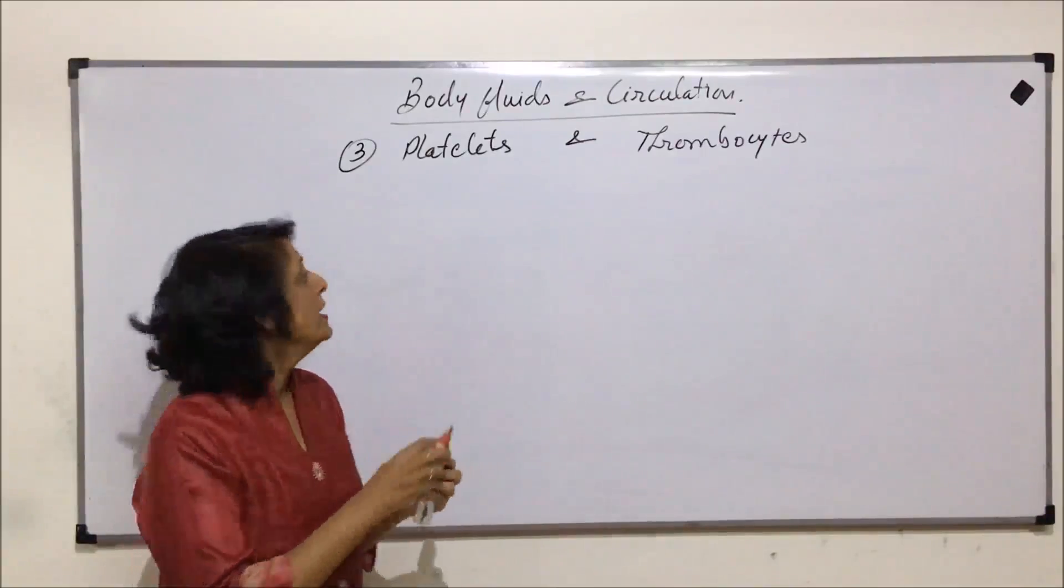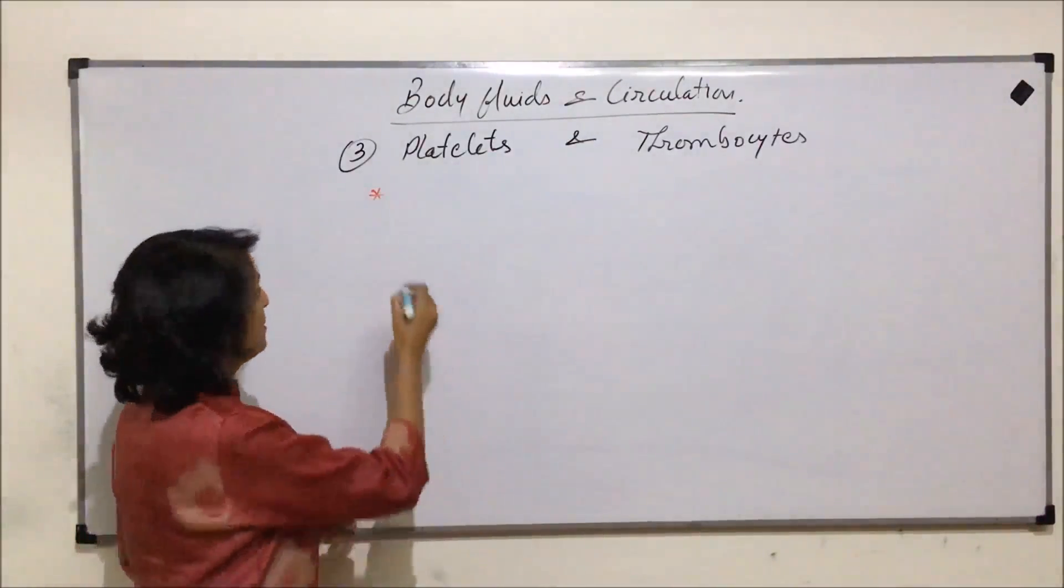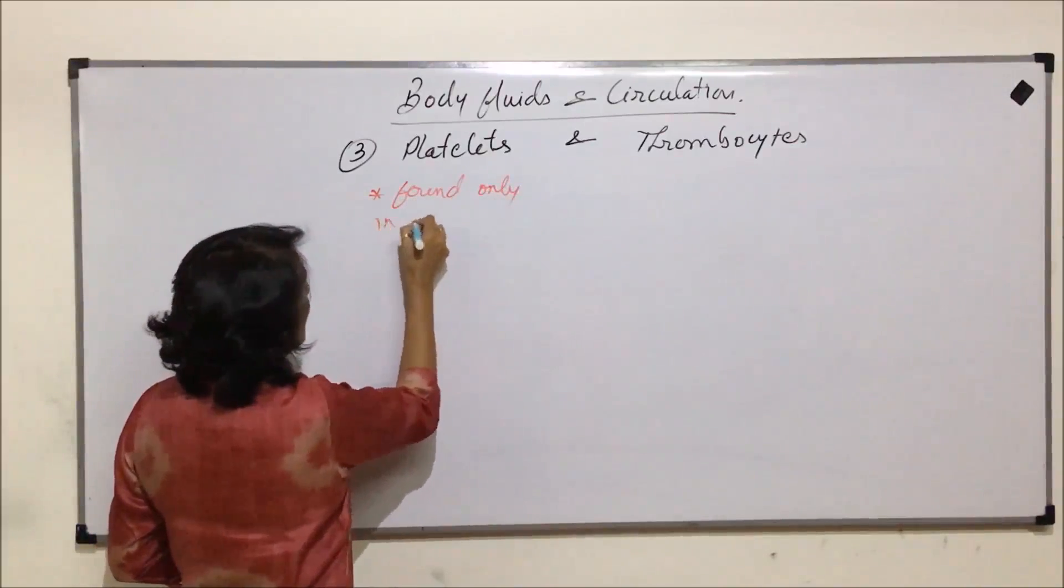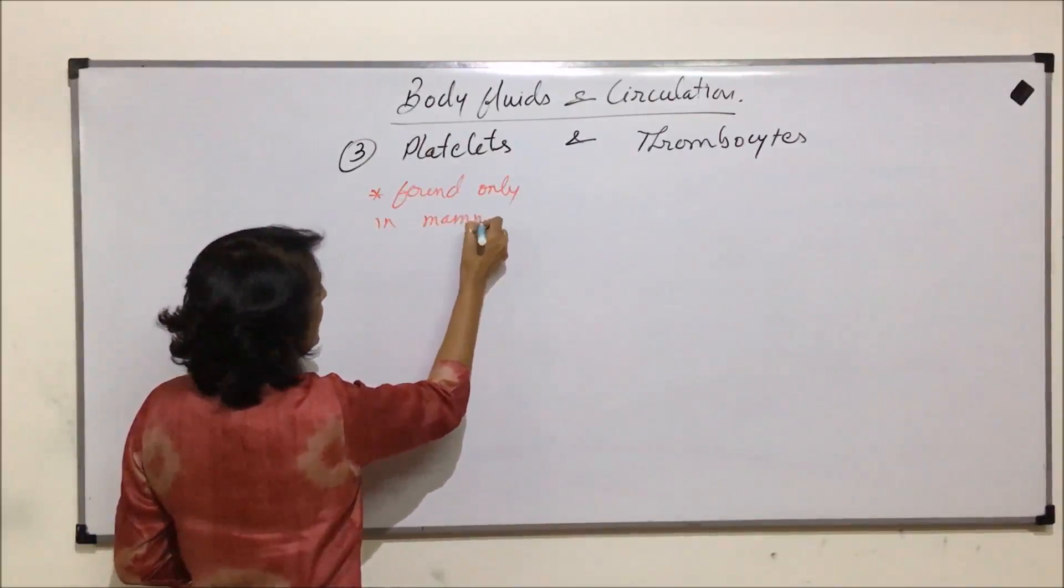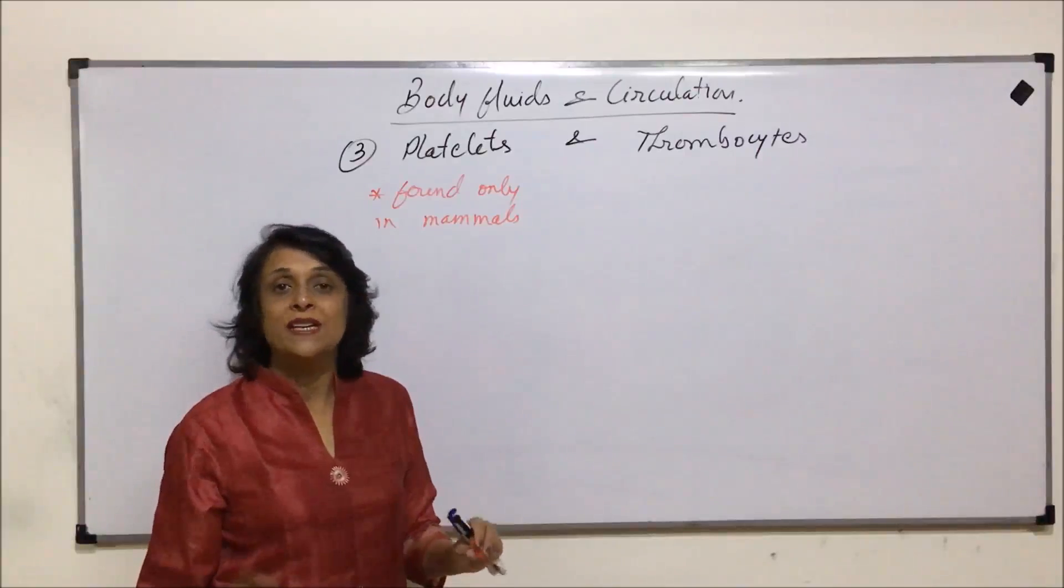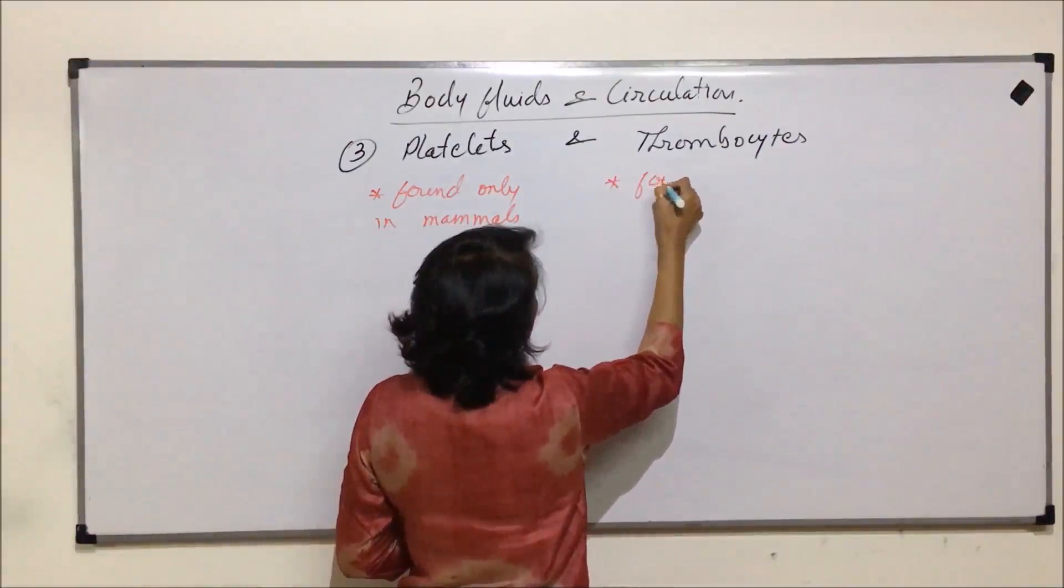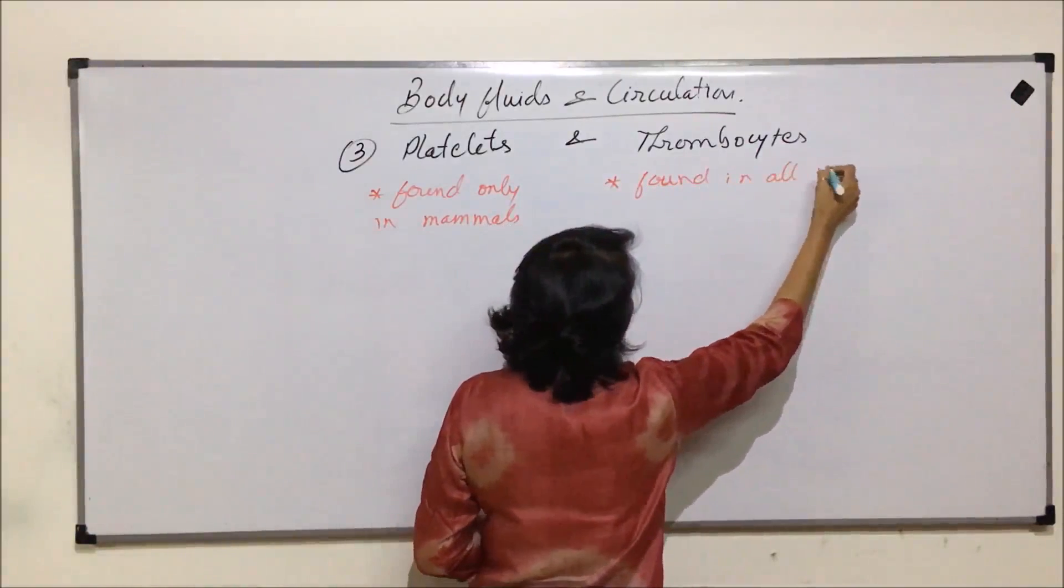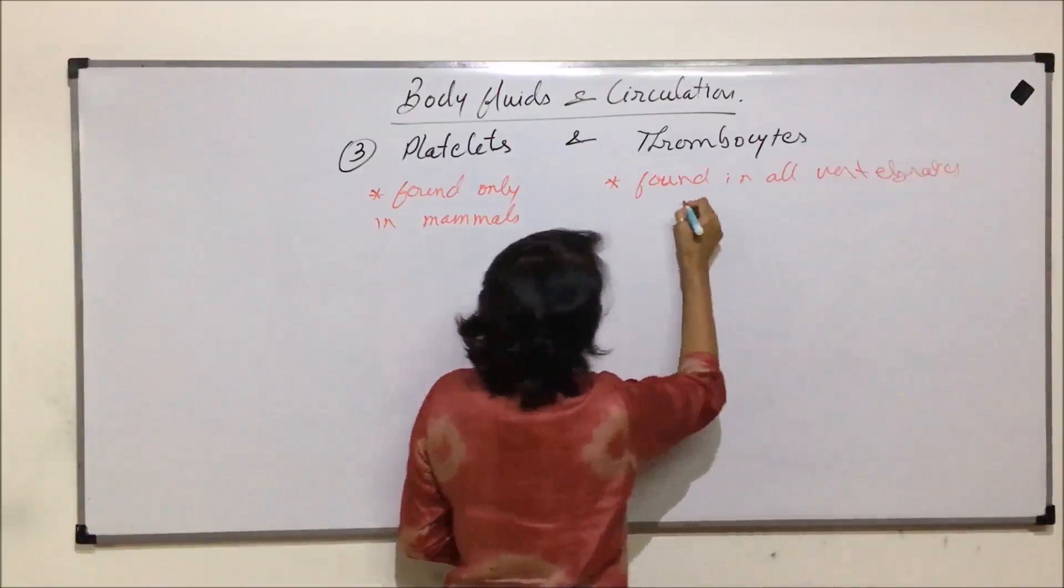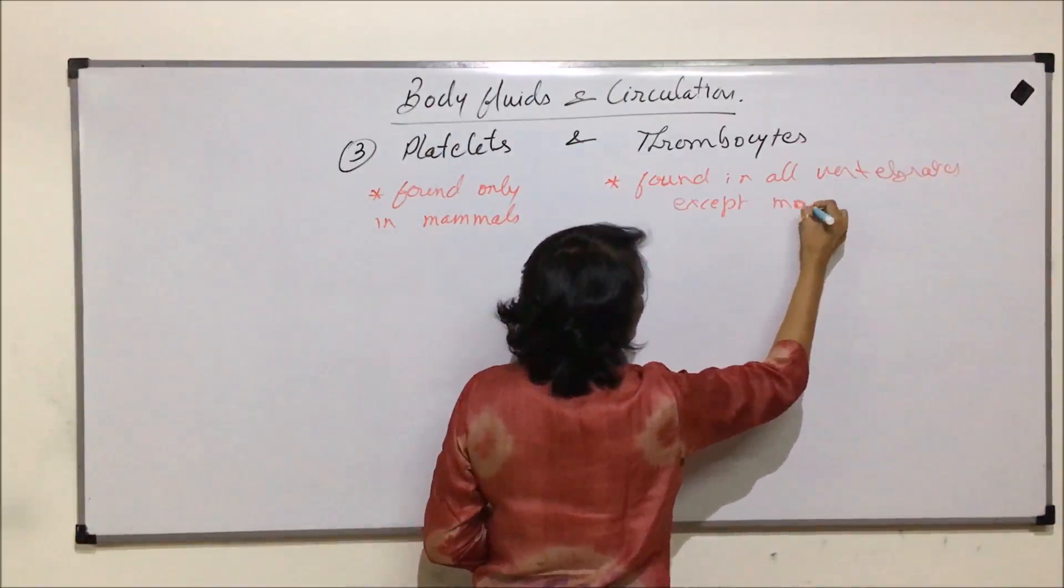Function-wise yes, but platelets are found only in mammals. Whereas thrombocytes are found in all vertebrates except mammals, because mammals have platelets.